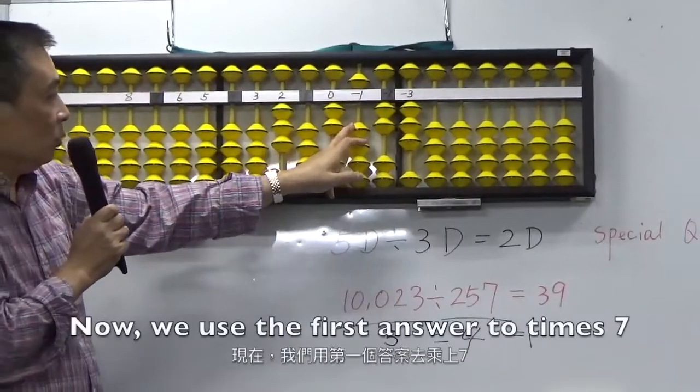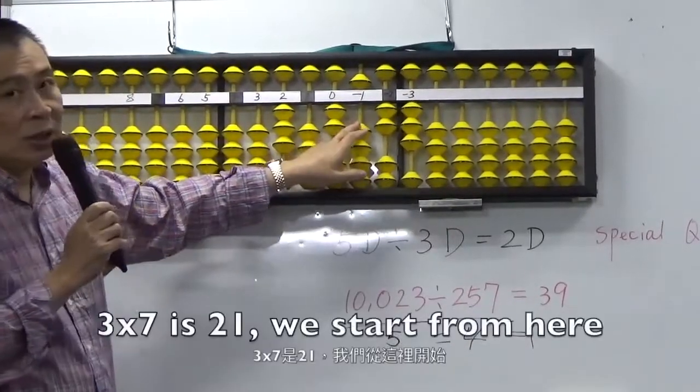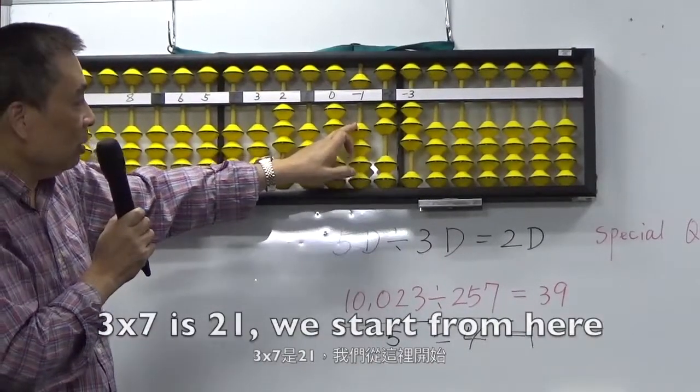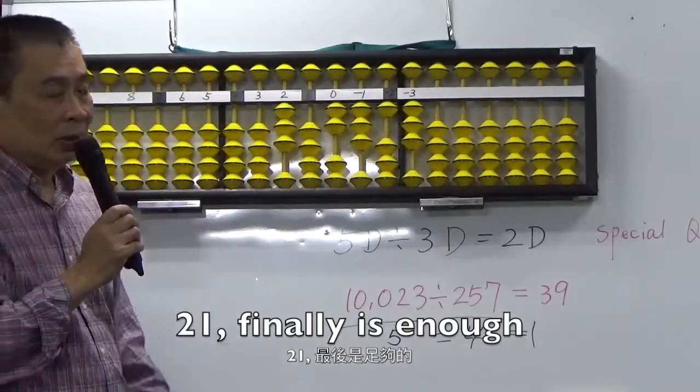Now, we use the answer to times 7. 3, 7 is 21. From here. 21. Finally, it's enough.